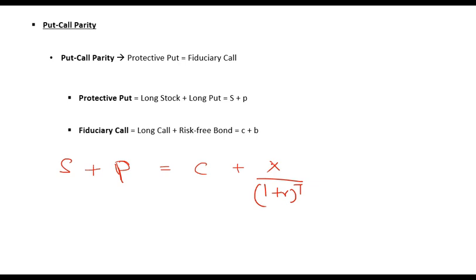X is the face value of the bond and also the strike price. So whatever the strike price is on the call and put options, that should be the face value of this bond.